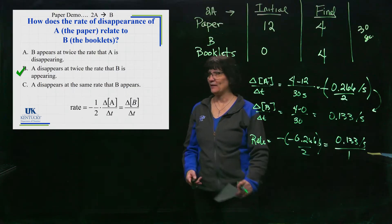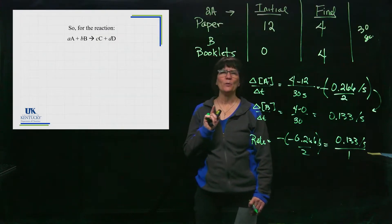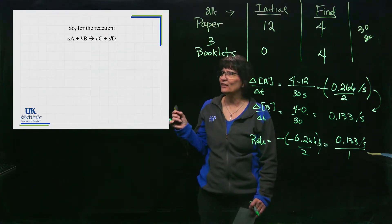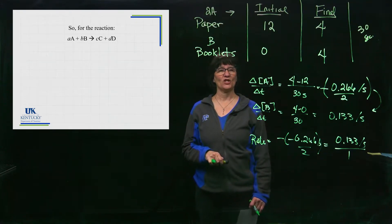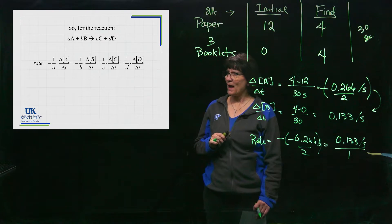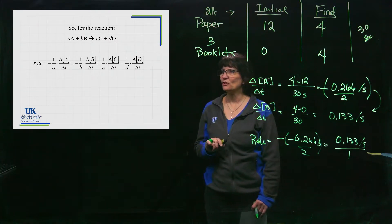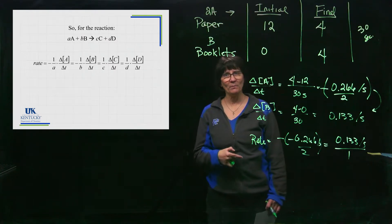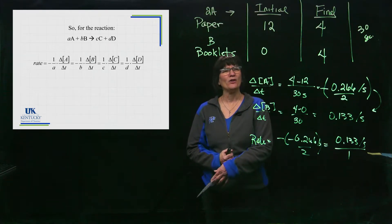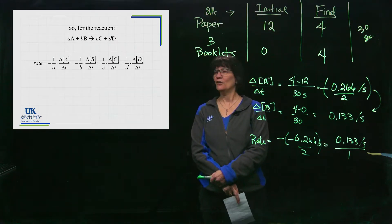For any generic reaction, we can incorporate the coefficients. If A and B are reactants and C and D are products, with lowercase a, b, c, d as their coefficients, those coefficients appear in the denominator of the rate expression. Reactants have a minus sign and are divided by their coefficient; products have no minus sign but are also divided by their coefficient. The rate can be determined by monitoring any one of those substances.